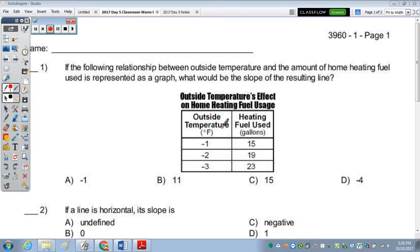Okay, in number one, what would the slope of the resulting line be if the relationship between outside temperature and the amount of home heating fuel is represented by a graph?